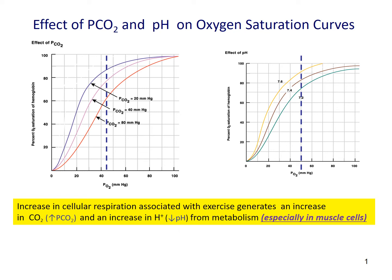In part 2 of this lecture, we'll take a deeper look at the oxygen binding curve. The shape of the oxygen binding curve, or the oxygen saturation curve, is influenced by two factors: the level of carbon dioxide and the level of pH.